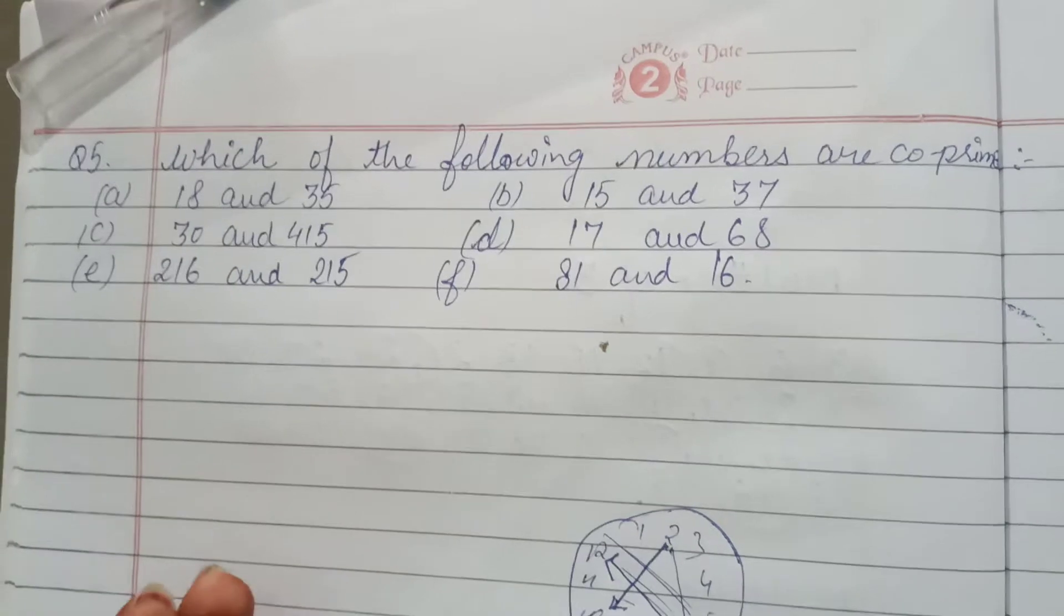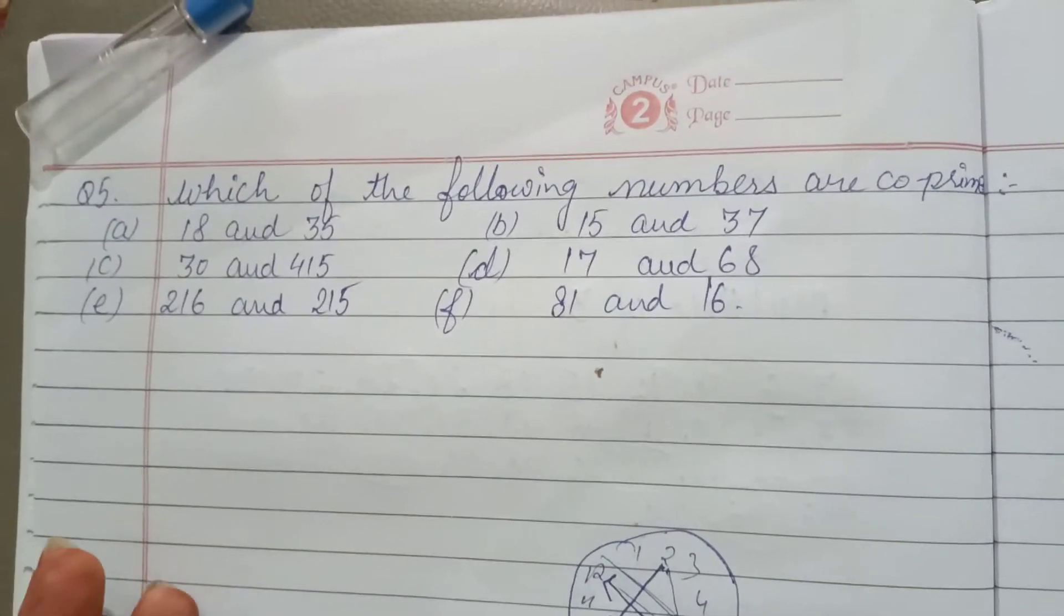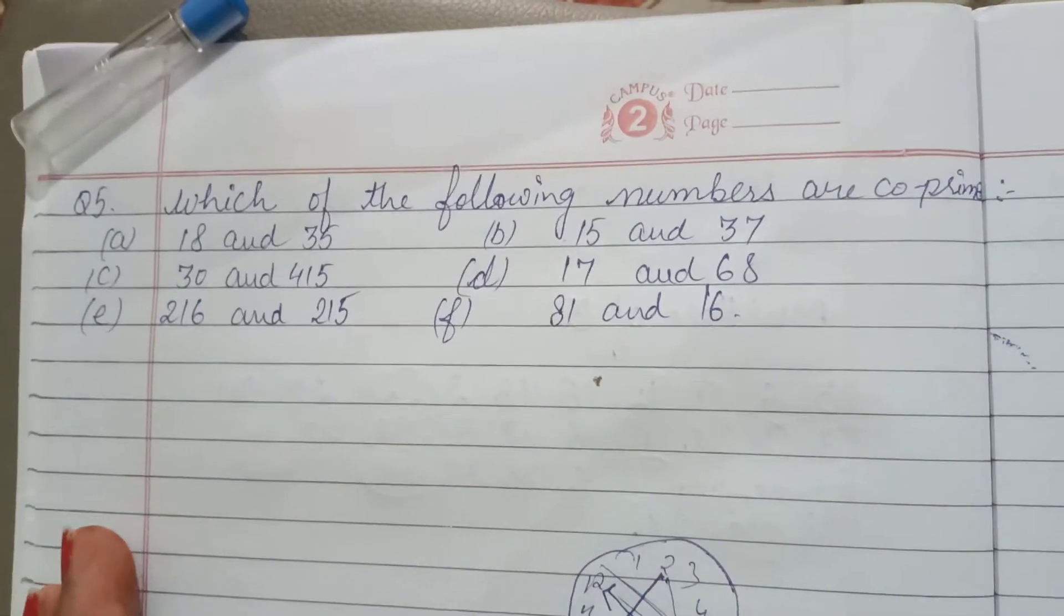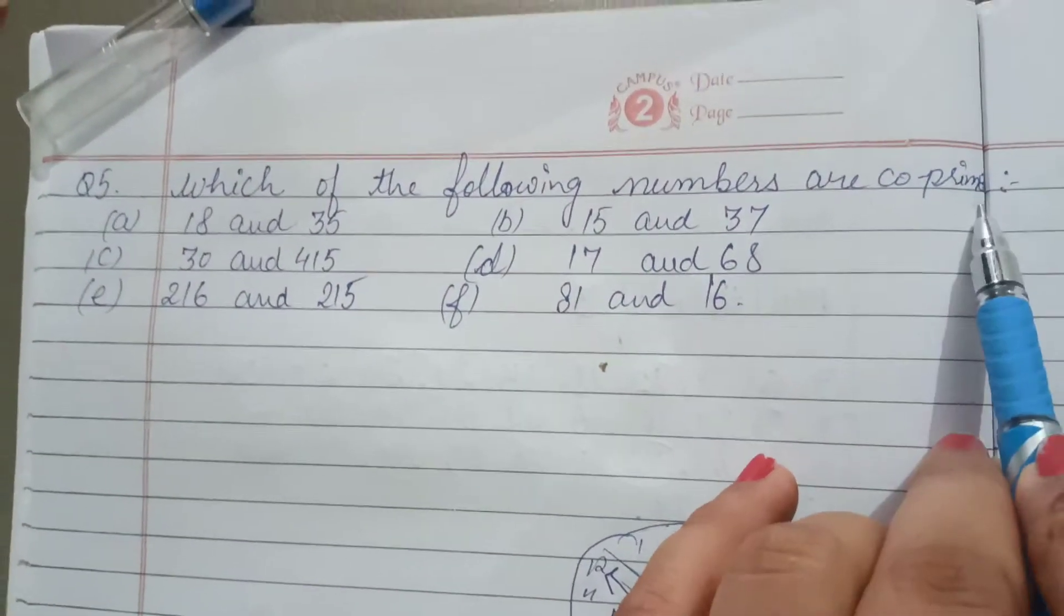We already discussed prime numbers, composite numbers, factors and multiples. Now, we start with co-prime.